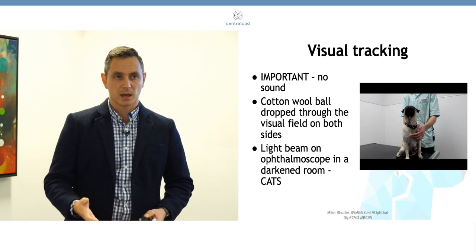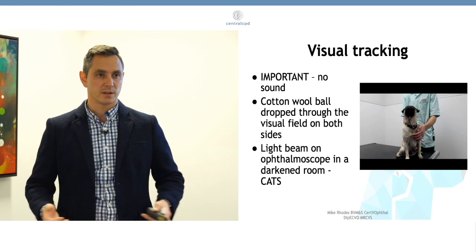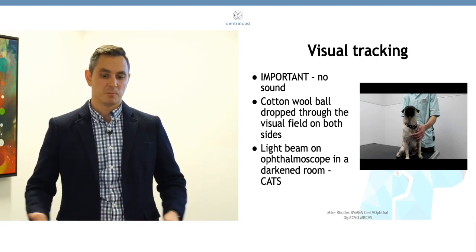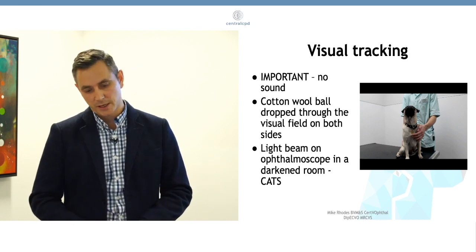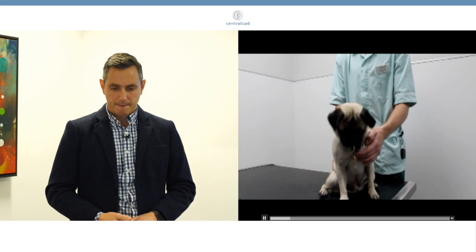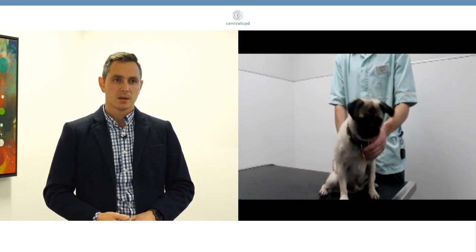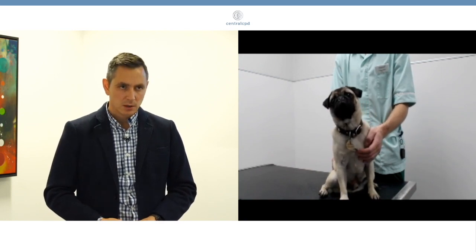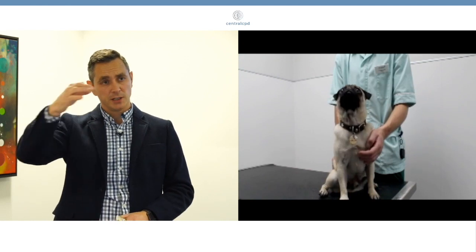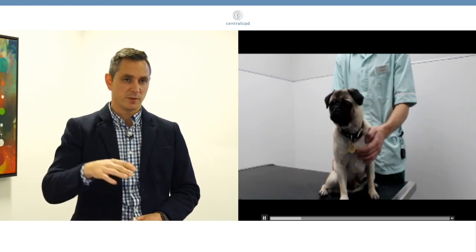Again, a bit like the visual placing test, some animals just don't want to play ball. They're too nervous, they think you're going to do something horrible to them, so they're just not going to play. But we'll show the video on this one. Can you see that? So we're dropping the cotton wool. And if you've got a really cooperative patient like this pug, you can actually do it over each eye to see if both eyes, both visual fields are working.